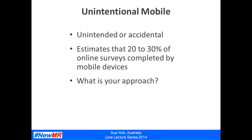This form of research has been referred to as unintentional or accidental mobile research, and it's really the prevalence of unintentional mobile research that was one of the reasons why by 2014 it was safe to say that mobile market research had arrived. It's difficult to get reliable figures, but there seems to be a consensus that around 20-30% of online surveys are completed on mobile devices.